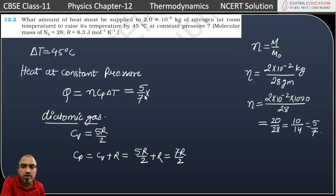5/7 × Cp value 7R/2 × ΔT value 45. 7/7 cancel here, and 45 × 5, 5 × 5 is 25, and 4 × 5 is 20, so it is 225. It will be 225/2 × 8.3. 2 cancels, then we will get 4.15.